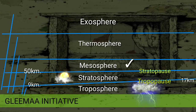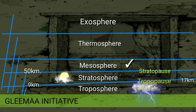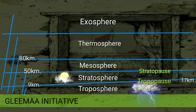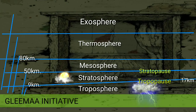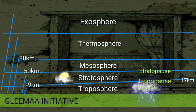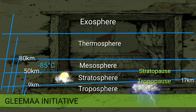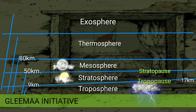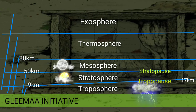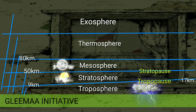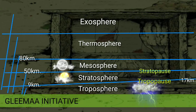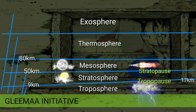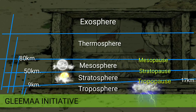Just above this lies mesosphere, the third layer of the Earth's atmosphere. It extends from 50 kilometers to 80 or 85 kilometers above sea level. It is the coldest place on the Earth, with a sudden decrease of average temperature around minus 85 degrees Celsius. In this layer, noctilucent clouds are the highest clouds in the atmosphere and may be visible to the naked eye if sunlight reflects off them. The mesosphere is also the layer where most meteors burn up upon entering the atmosphere. This layer is mainly accessed by sounding rockets and rocket-powered aircraft. The upper limit of mesosphere is mesopause.